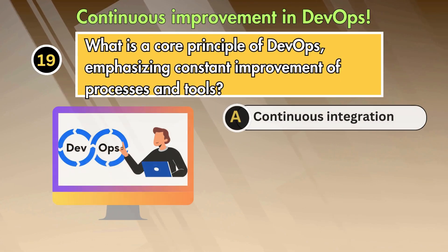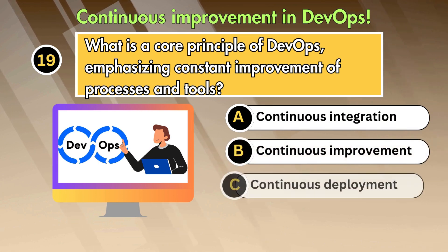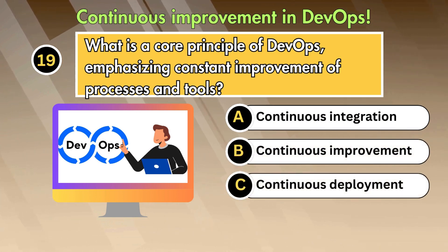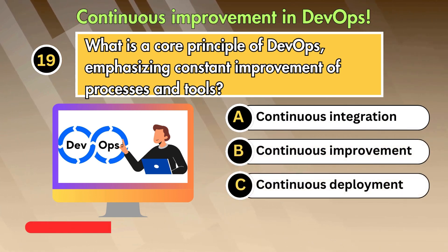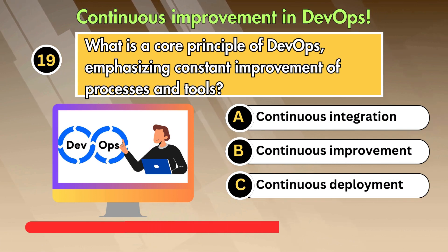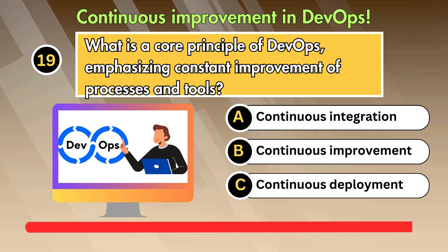What is a core principle of DevOps emphasizing constant improvement of processes and tools? Option 1: Continuous integration. Option 2: Continuous improvement. Option 3: Continuous deployment.